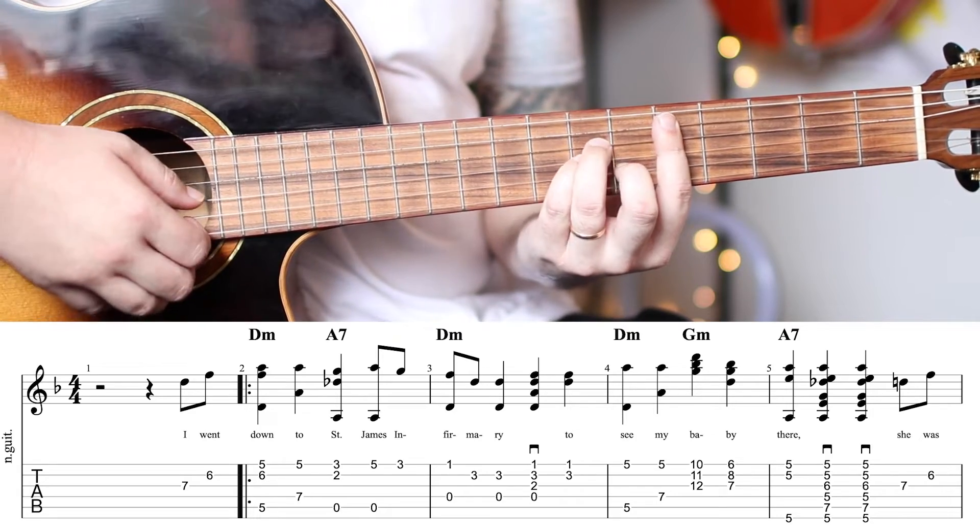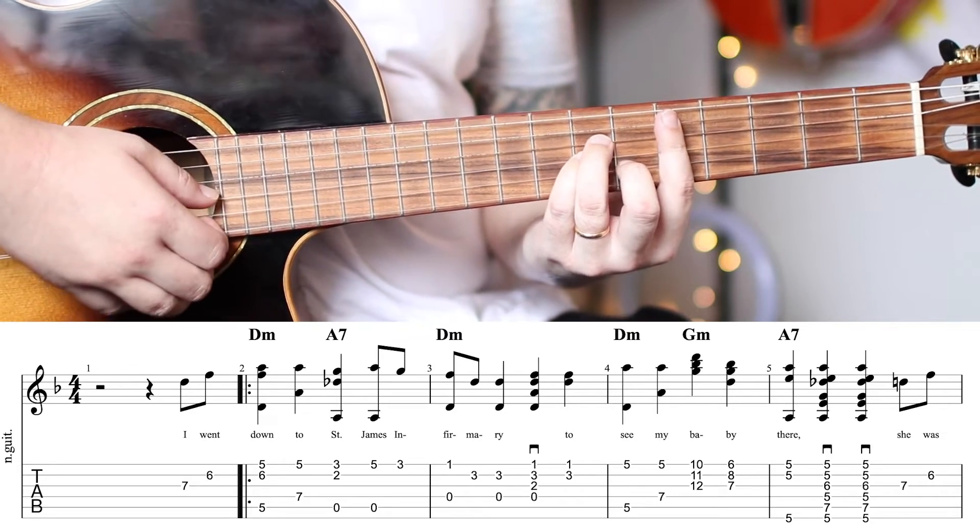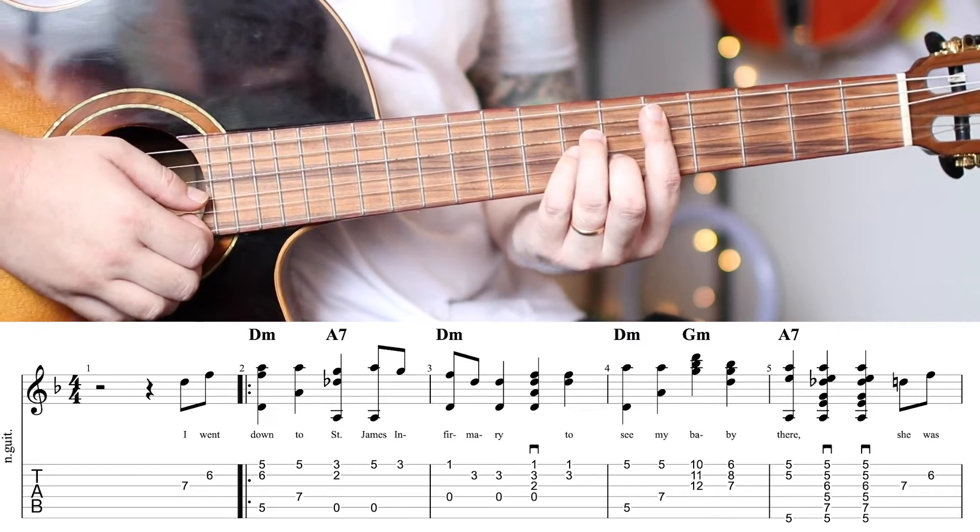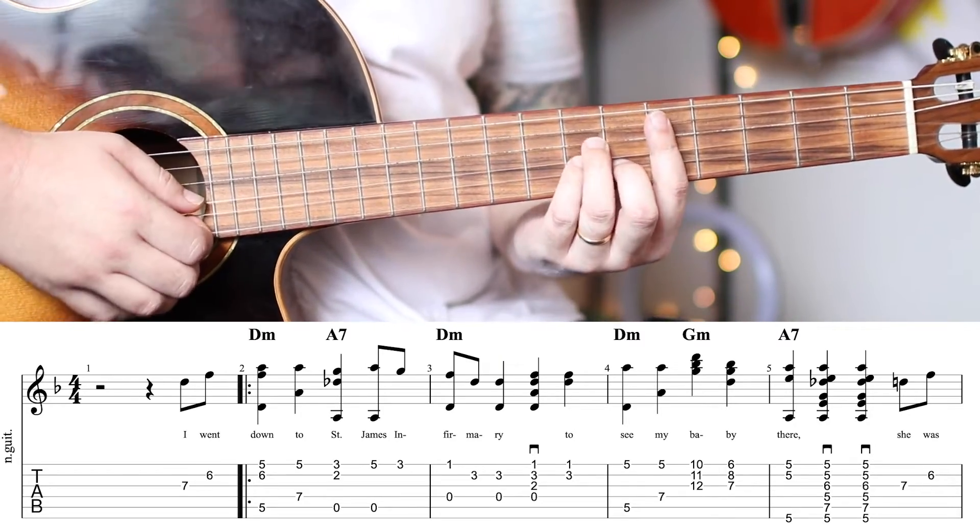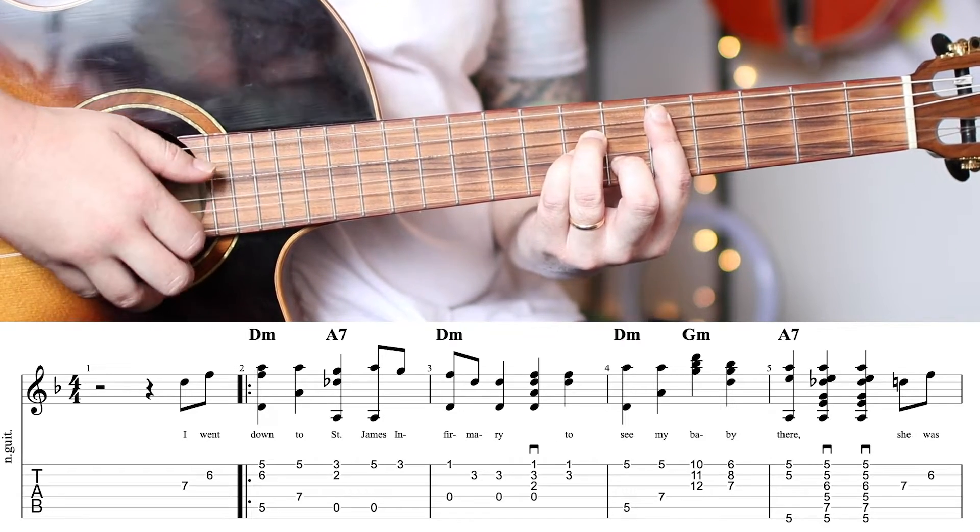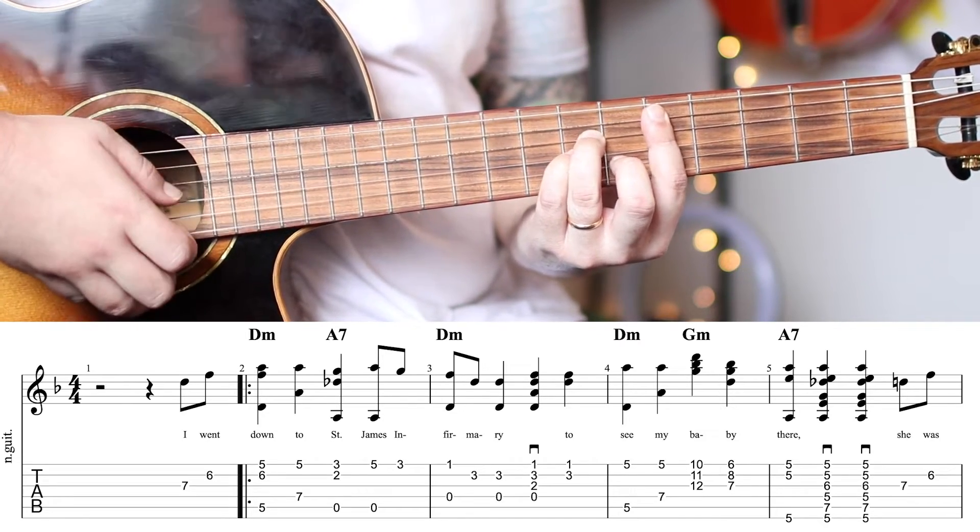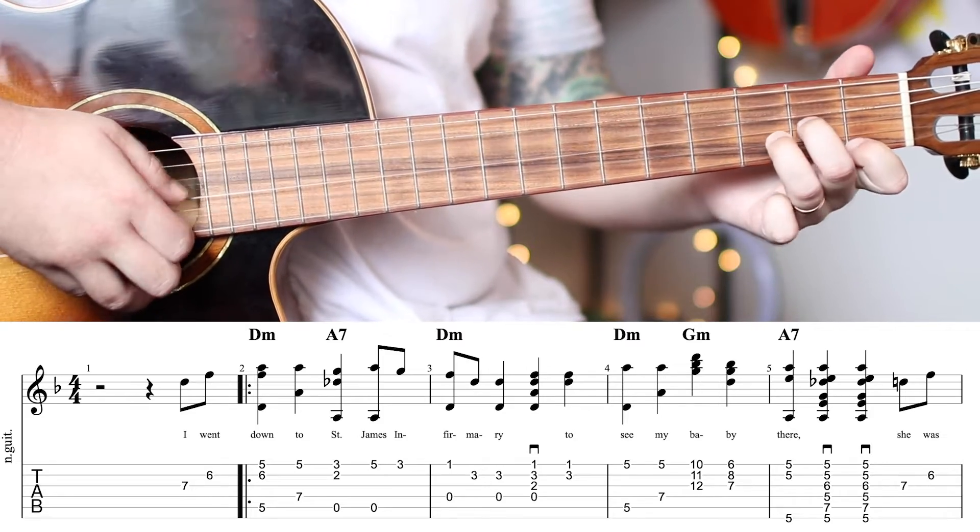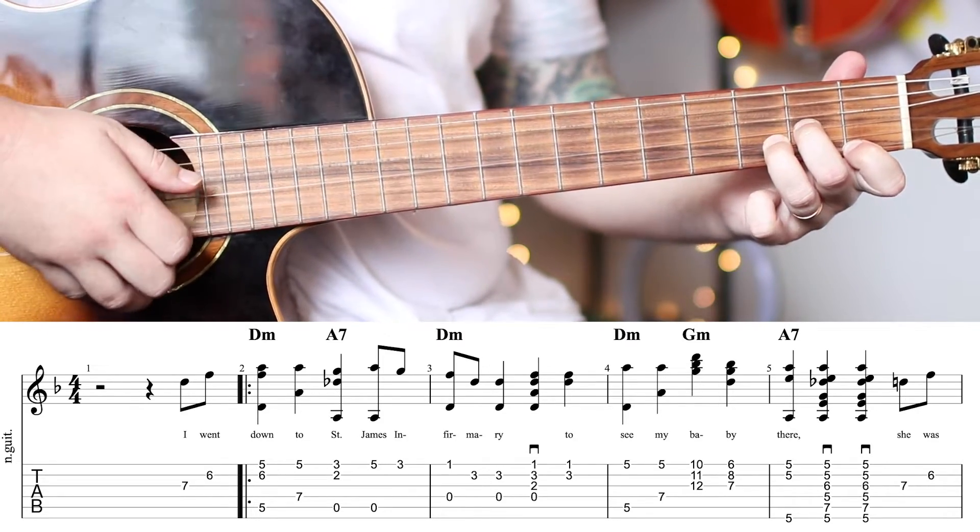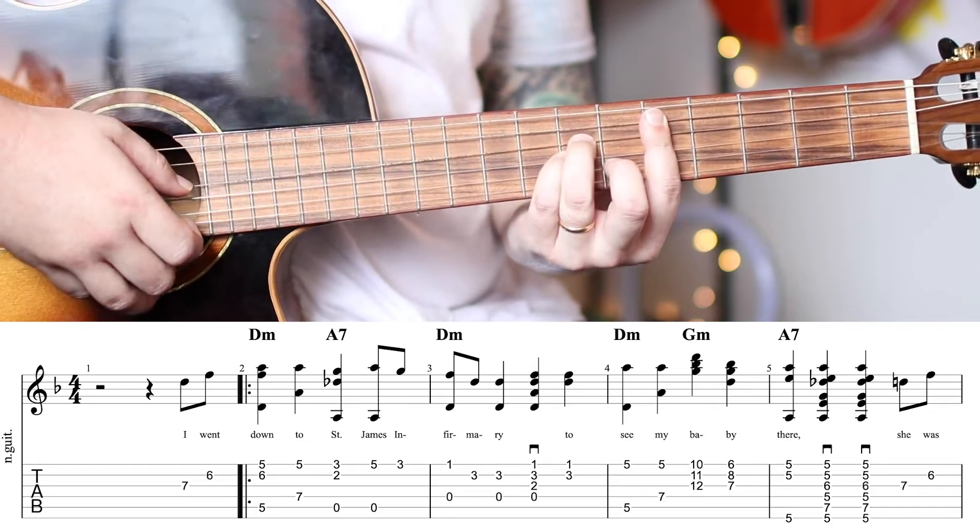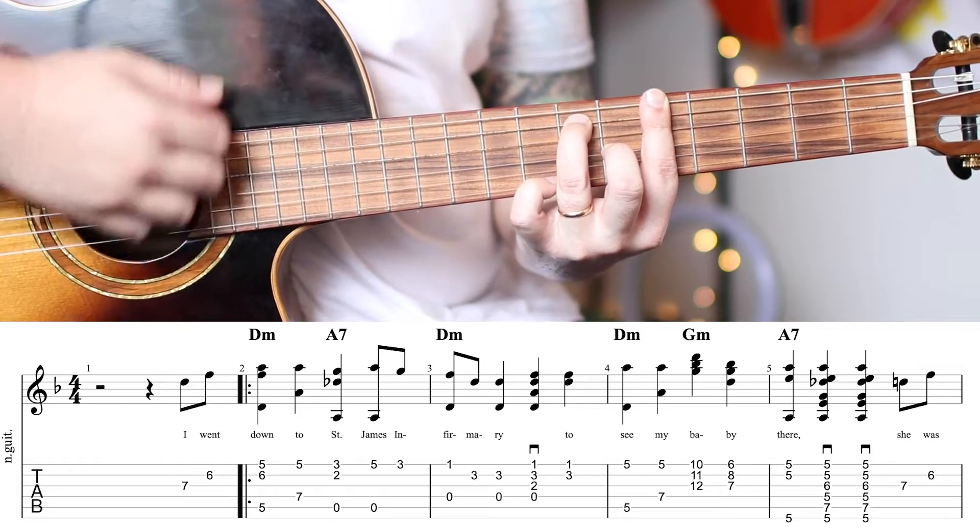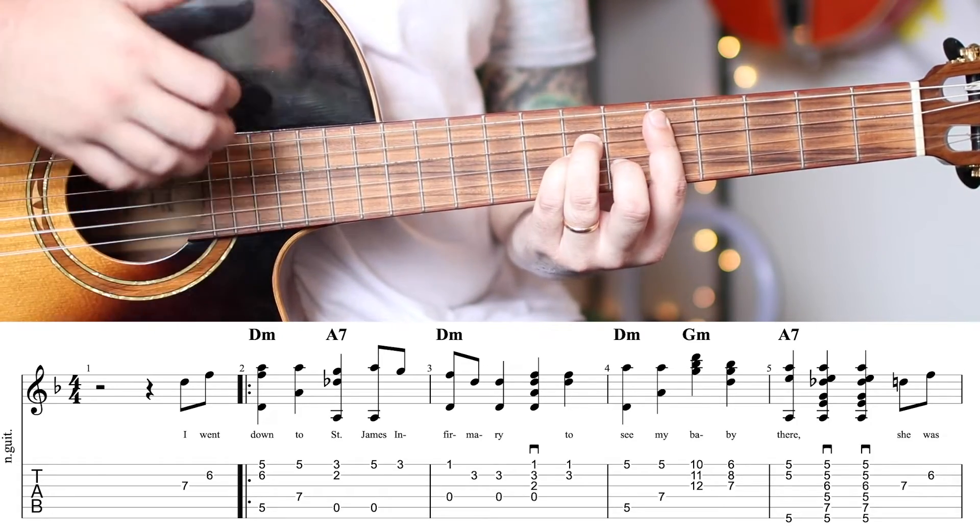Then you'll make a D minor, and you'll play that same kickoff that we did to start the song. So, let's play through these first four measures together, nice and slow. 4, and 1, 2, 3, 4, and 1, and 2, 3, 4. 1, 2, 3, 4. 1, 2, 3, 4, and...